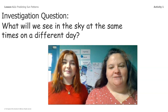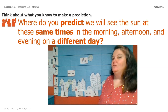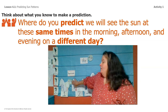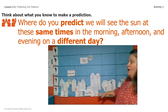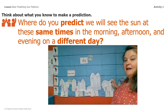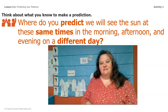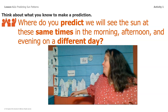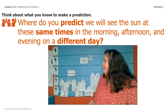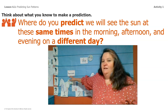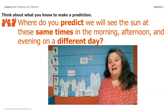In order to do that, we need to look at our sky mural again. We have our three observations recorded for morning, afternoon, and evening, and all three of these observations were made on the same day. I'm going to make another three sets of observations, and hopefully you'll get a chance to make some too. But before we do, I want us to predict where we will see the sun at the same time — morning, afternoon, and evening — but on a different day.